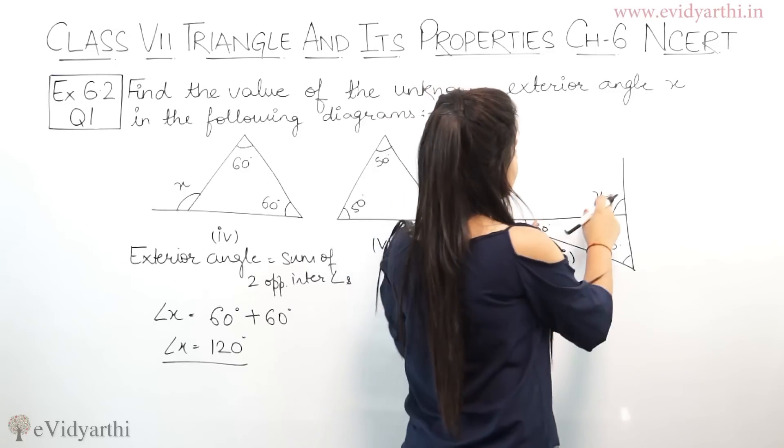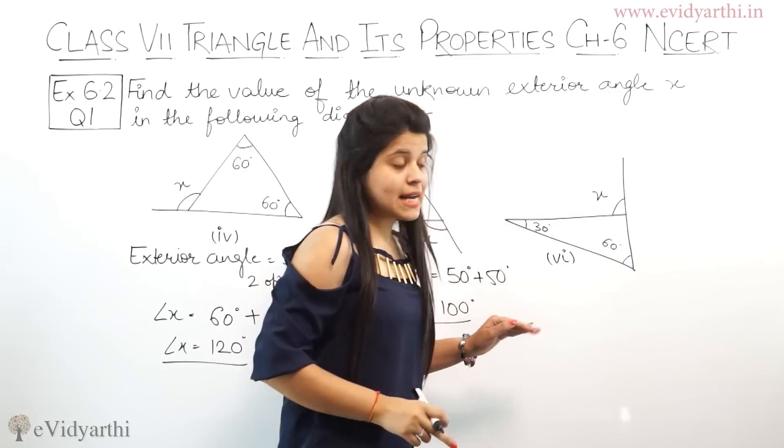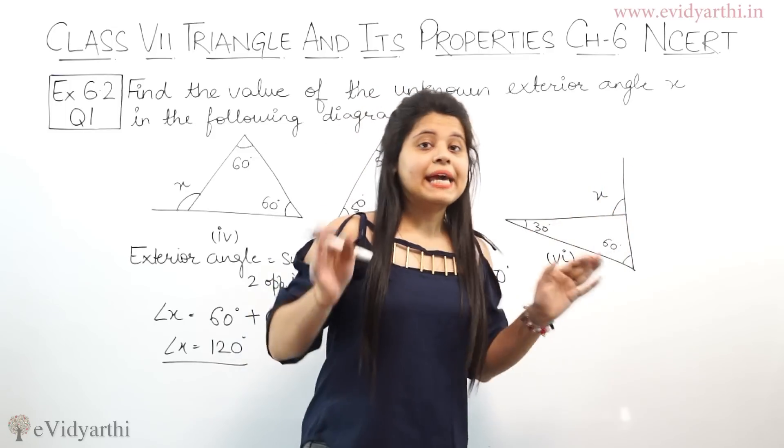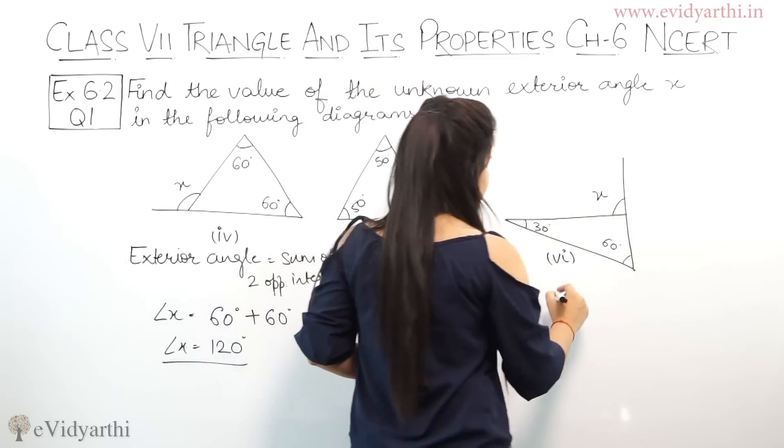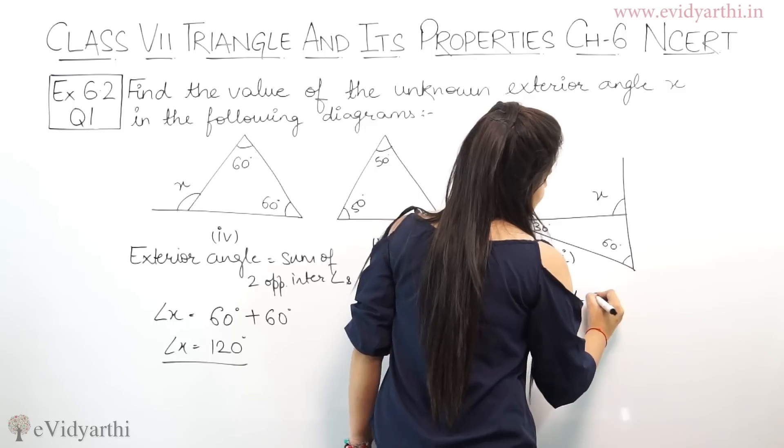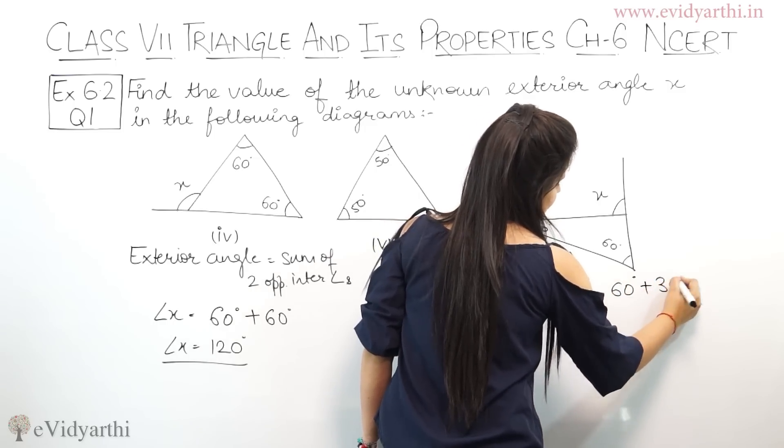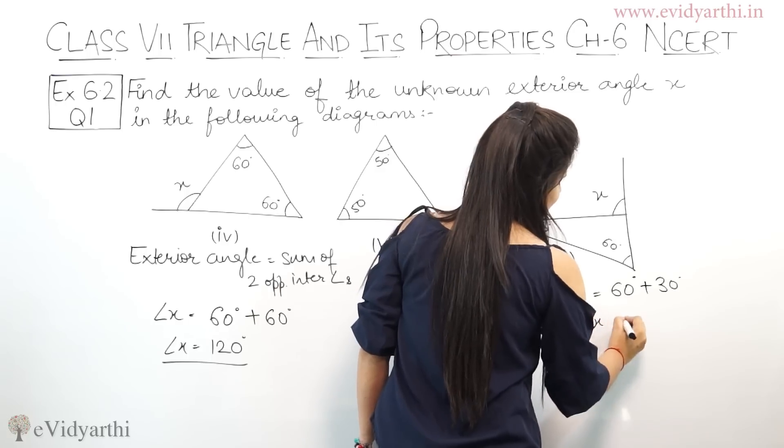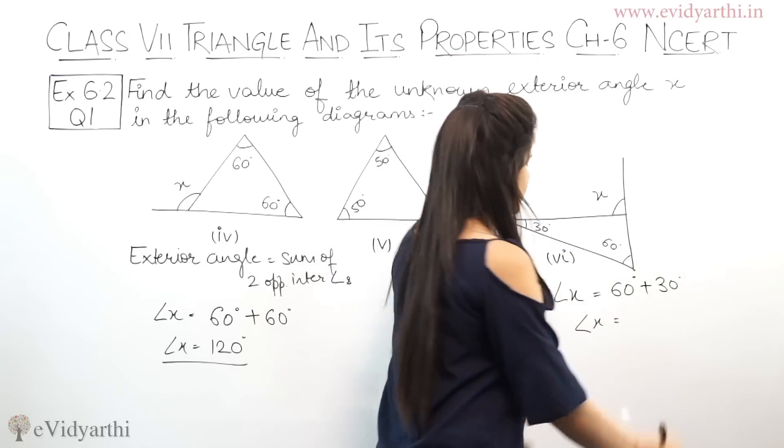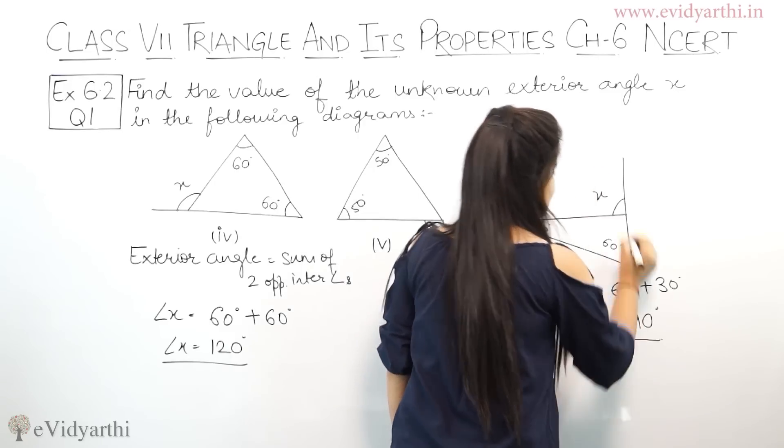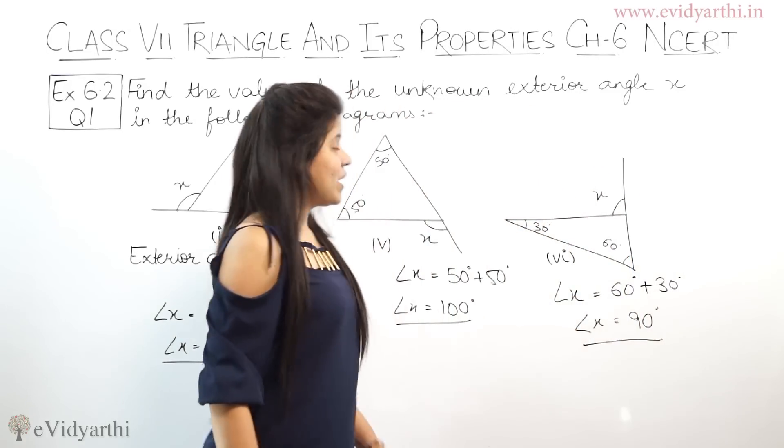In the sixth part, this angle's shape is the same, but the triangle is here, and this is its exterior angle. Same property apply. Angle X equals to 60 degree plus 30 degree. Angle X value: 0 plus 0 is 0, 6 plus 3 is 9. Angle X is 90 degree.